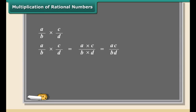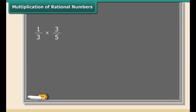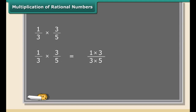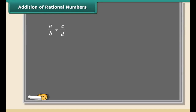Now we will study multiplication of rational numbers — this is the easiest one. To multiply two rational numbers, just multiply the numerators and denominators separately. Here is an example: we will multiply one by three and three by five. First multiply the numerators, then multiply the denominators. This fraction can be further simplified to one by five.